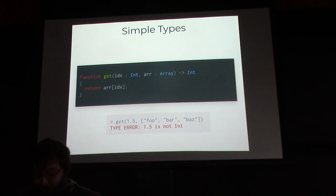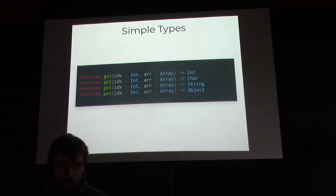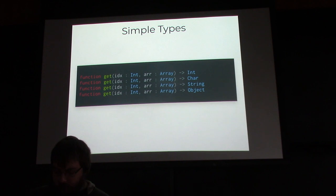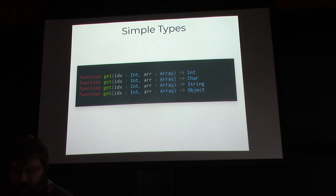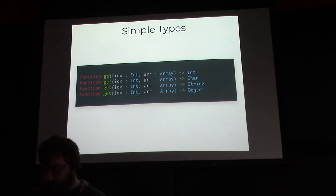But this is really inflexible because it only works for integer arrays — the return type is an integer. So if we wanted different array contents we'd have to copy-paste boilerplate. We could have arrays containing integers, characters, strings, objects, whatever, but we would need different functions because simple types concretize the contents of the array.